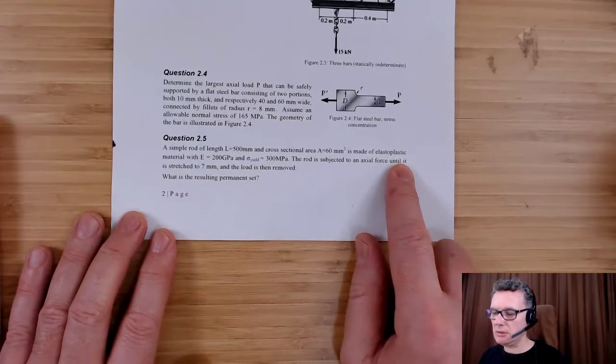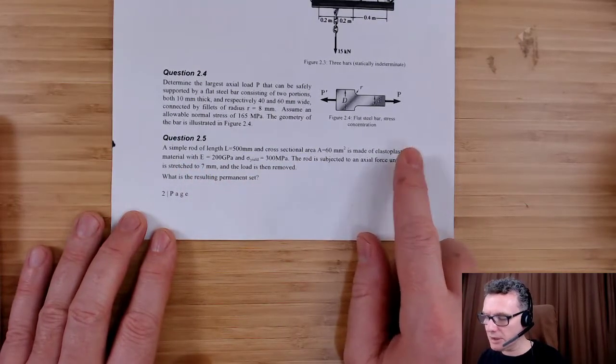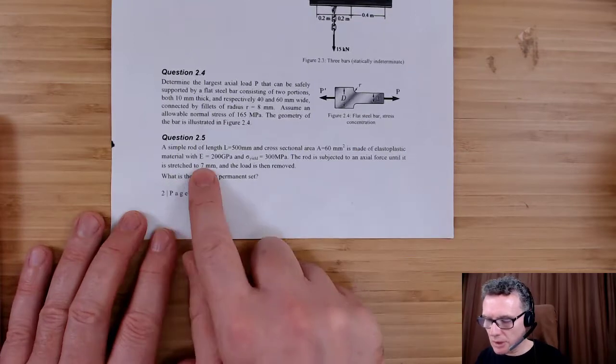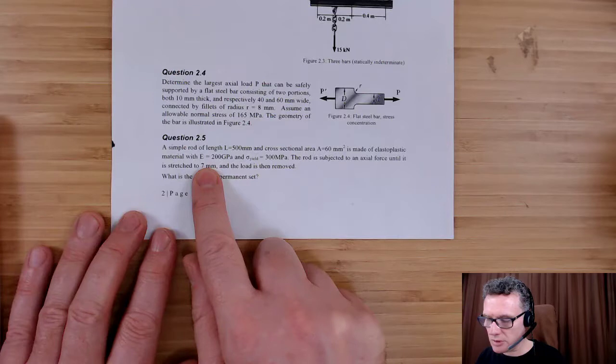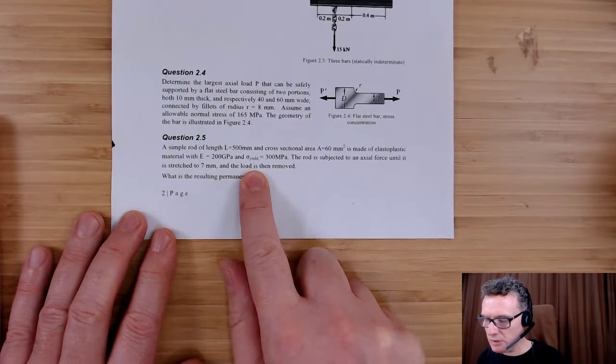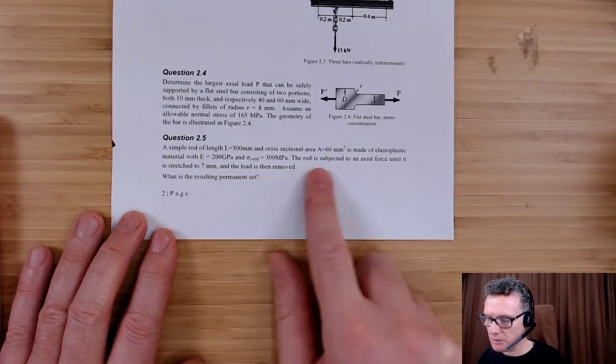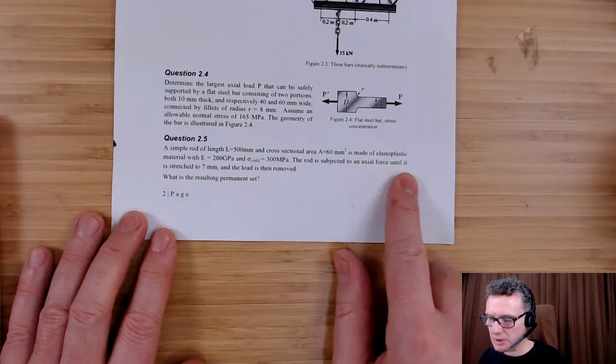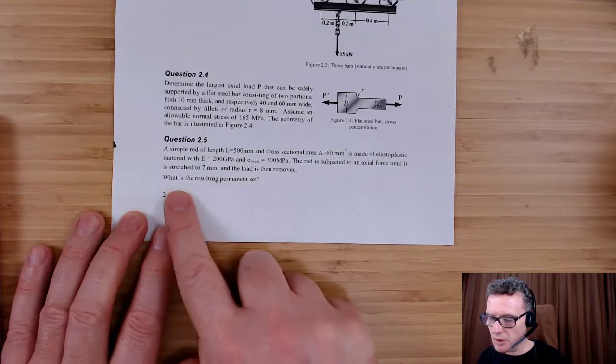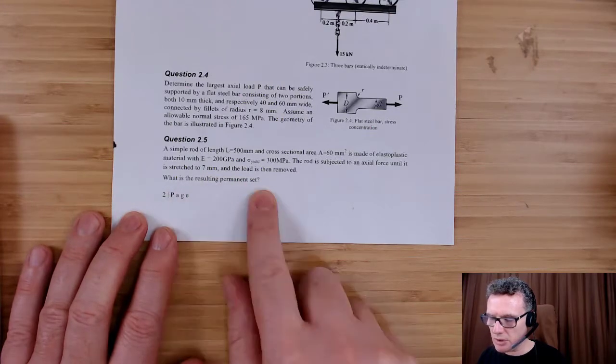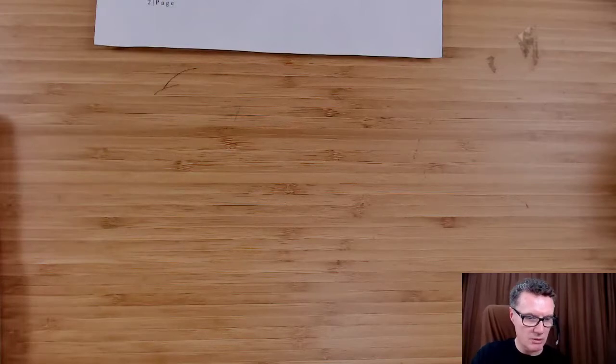It has a Young's modulus of 200 gigapascals and a yield stress of 300 megapascals. The rod is subjected to an axial force until it's stretched to seven millimeters and the load is removed. What is the resulting permanent set?